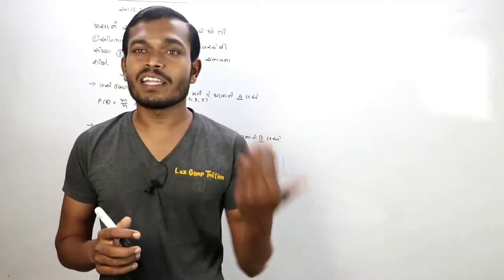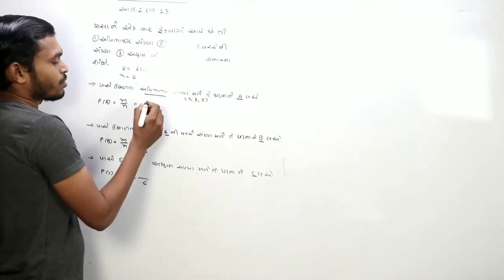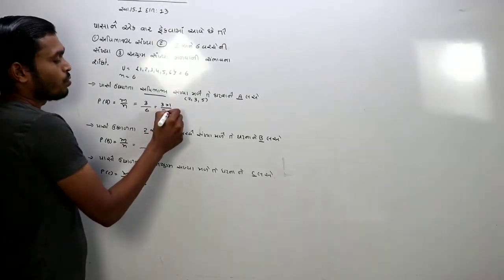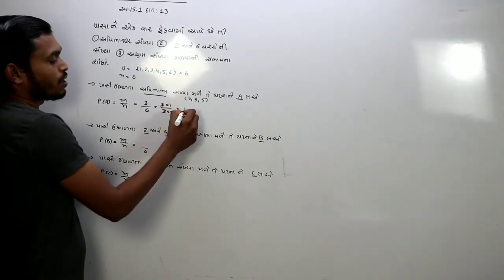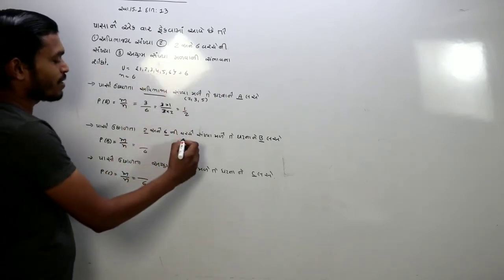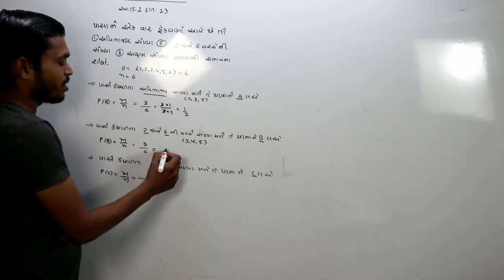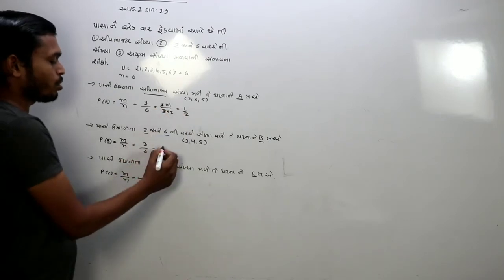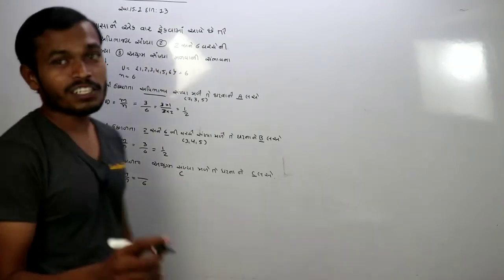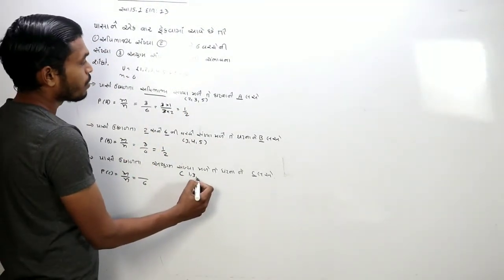આવે છે પાંચ, પાંચ ને ભાગી શકાતી નથી તો અભાજ્ય સંખ્યા થઈ. તો અભાજ્ય અને સમ એટલે યુગ્માં, વિષમ એટલે એક, ત્રણ, પાંચ. એટલે 1, 3, 5 (Then comes five. Five cannot be divided, so it's a prime number. Prime and even means yugma (even), odd means one, three, five. That is 1, 3, 5).